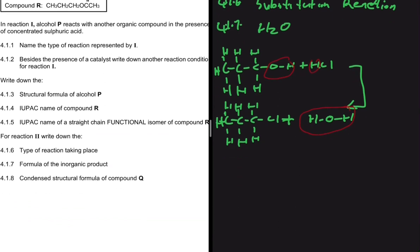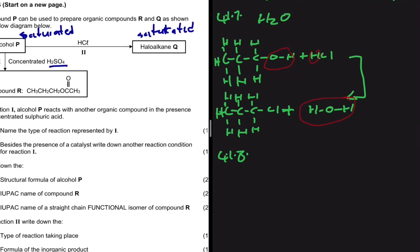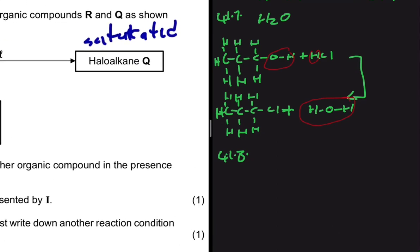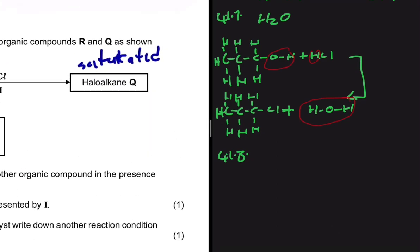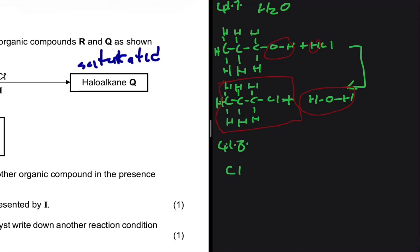The last question, 4.1.8, asks for the condensed structural formula of compound Q. We already know what compound Q is from our work in 4.1.7 — it's the haloalkane. So the condensed structural formula is CH₃CH₂CH₂Cl, and we're done.